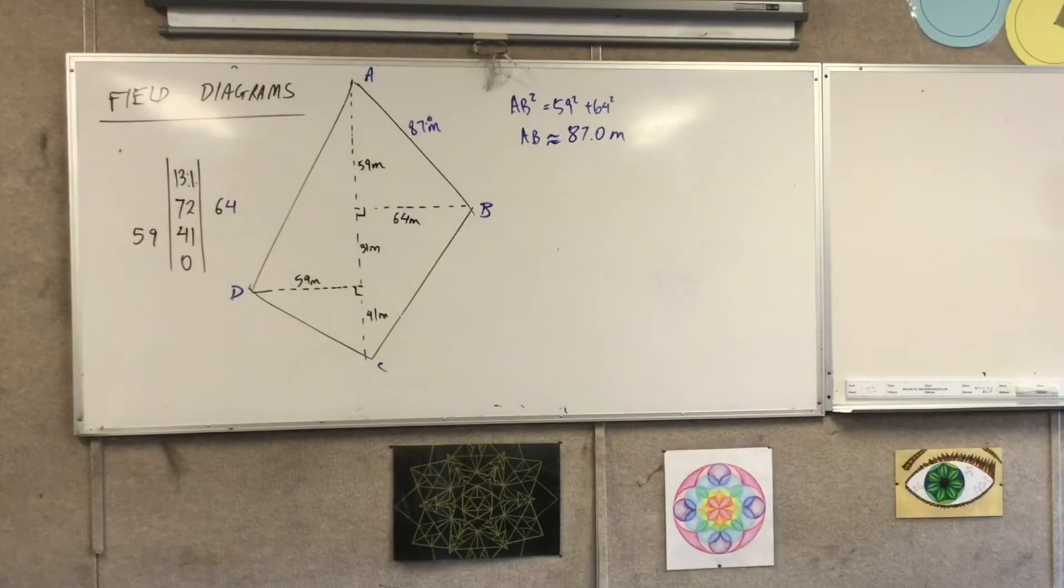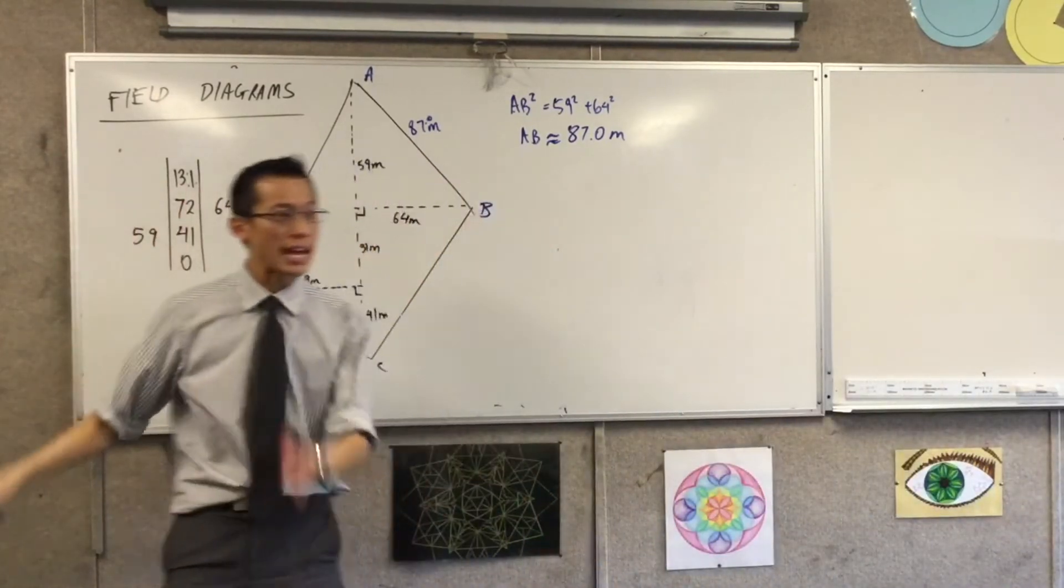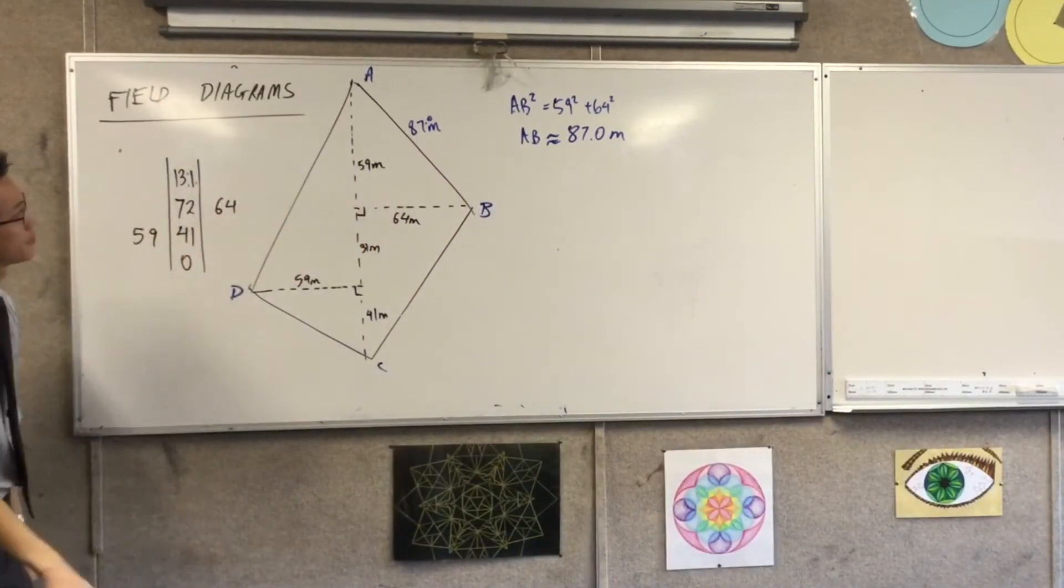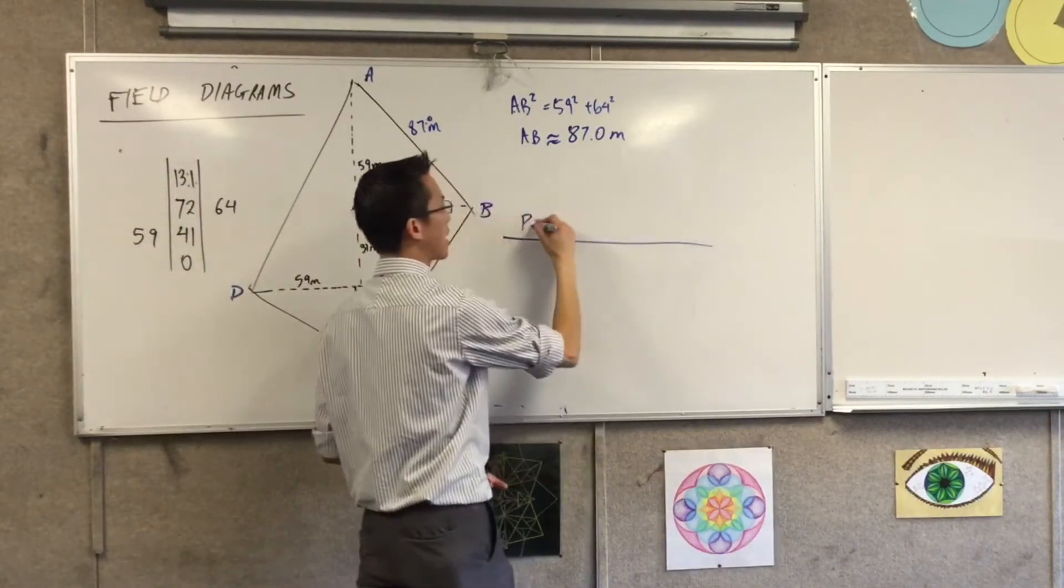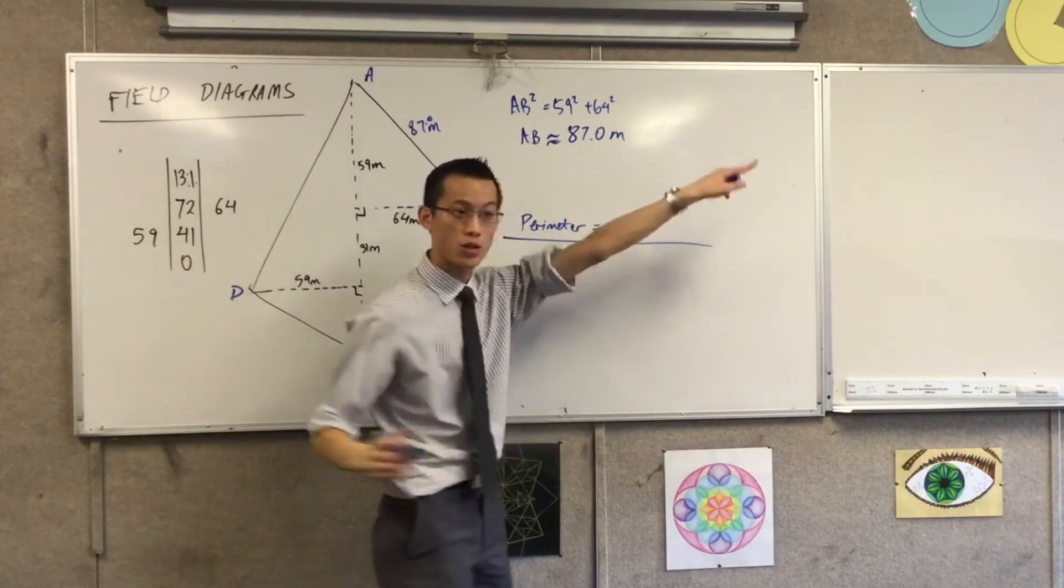You can repeat this process for each one of your lengths, and you'll get a perimeter. So once you've got that, I'd love you to work out what your perimeter is and pop it up on the board, where I've given you a spot.